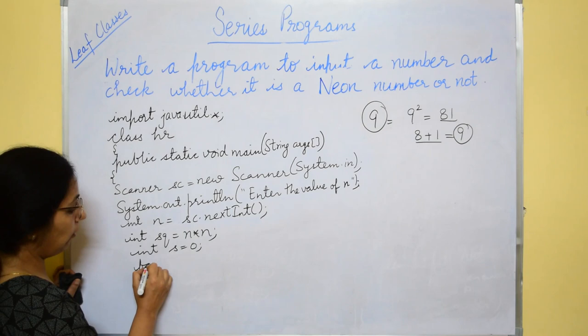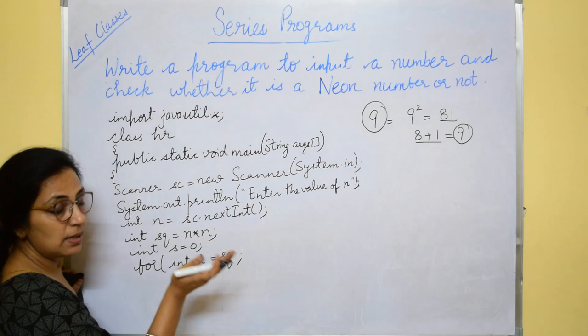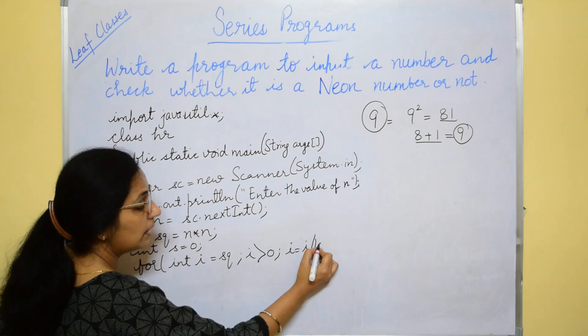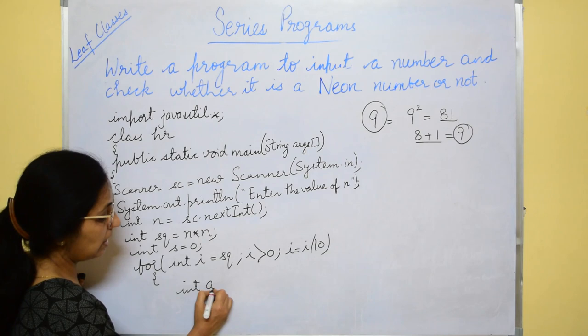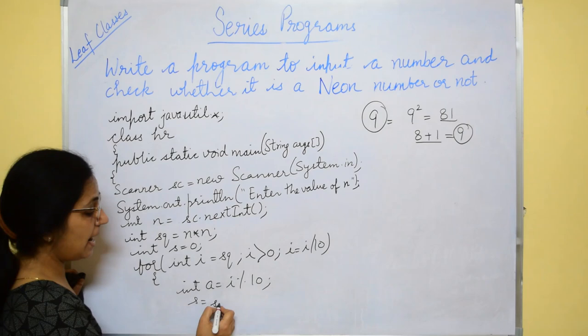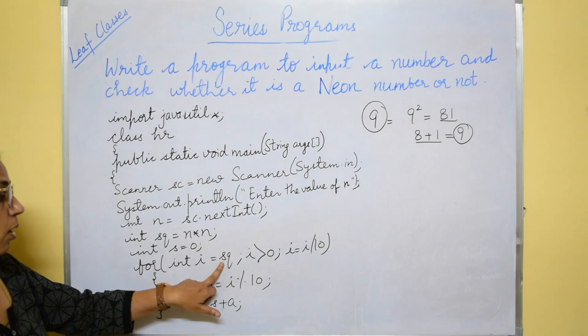Now, for the loop, inti equals to sq. Till this is greater than 0, next value i equals to i slash 10 and now you will find inti a equals to i mod 10. i mod 10 will always give right most digit and we add it to s variable. After completion of the loop, in s variable you will have the sum of the digits of sq variable. sq variable contains the square of the number.